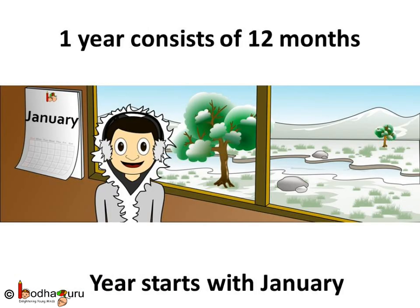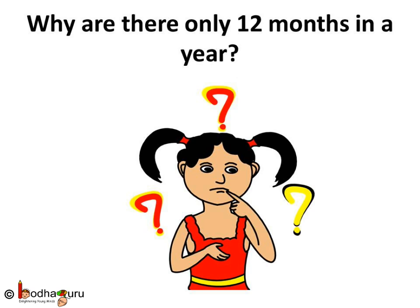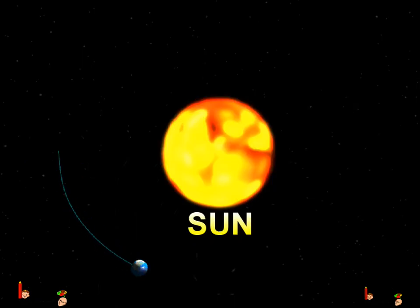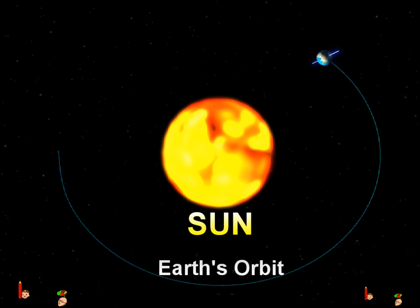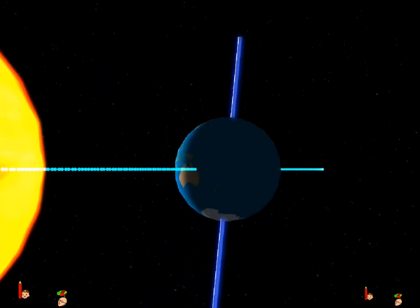So remember, one year consists of 12 months and it starts with January and ends with December. You may ask why only 12 months, not 13 or 11 months in a year. Actually, this is based on the revolution of the earth around the sun. The year is based on the number of days the earth takes to revolve around the sun, and this we call a year. Hence, a year always has 12 months.